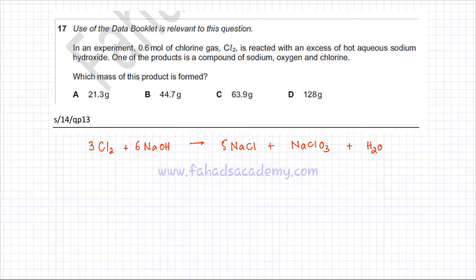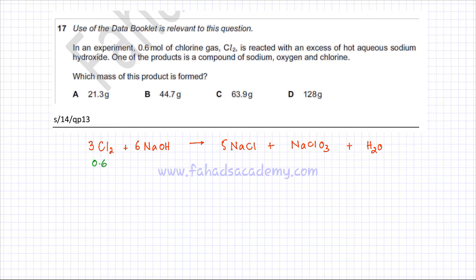The information provided in the question is that you have 0.6 moles of chlorine. I'm going to use ratios now. The product that contains sodium, oxygen, and chlorine is this one. He's basically asking for the mass of this product. Now you need to use ratios. If you look at the equation, 3 chlorines produce 1 NaClO₃.